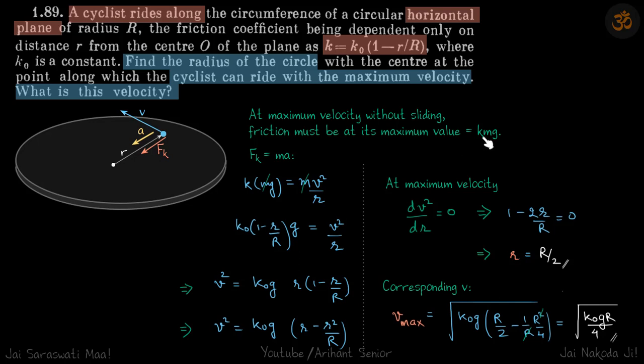We'll write Fₖ = ma on the body, and k becomes kmg. The maximum value equals mv²/r. From here we get the value of velocity, the maximum velocity a cyclist can ride at distance r.